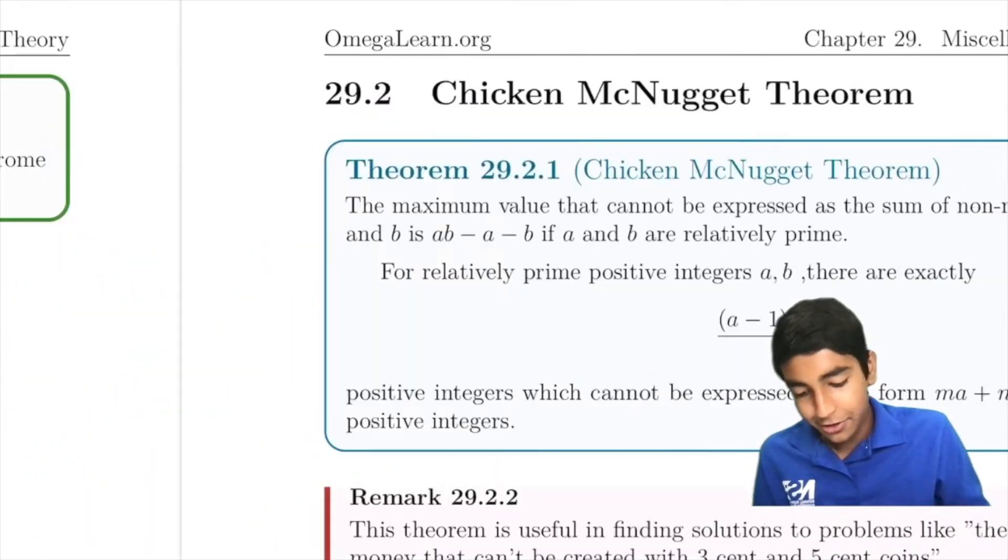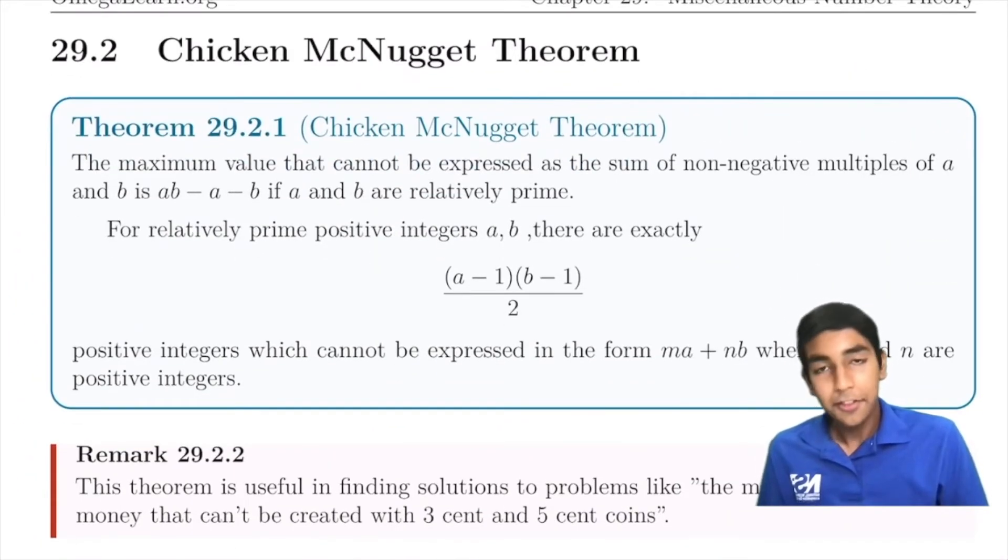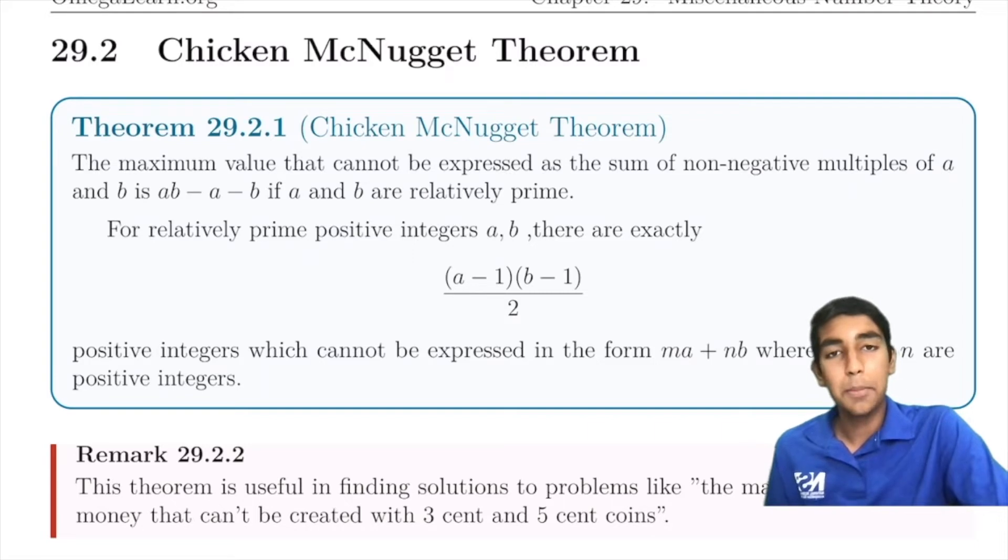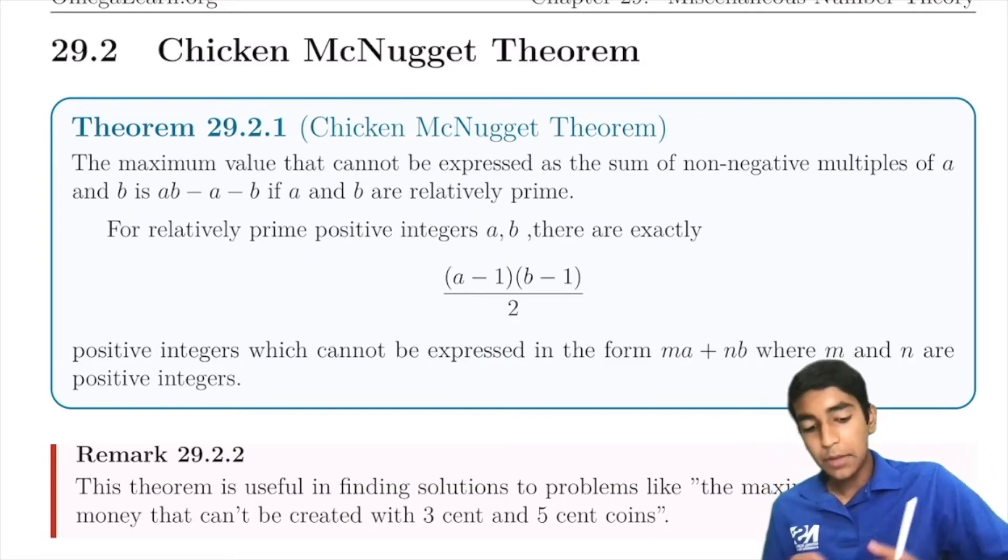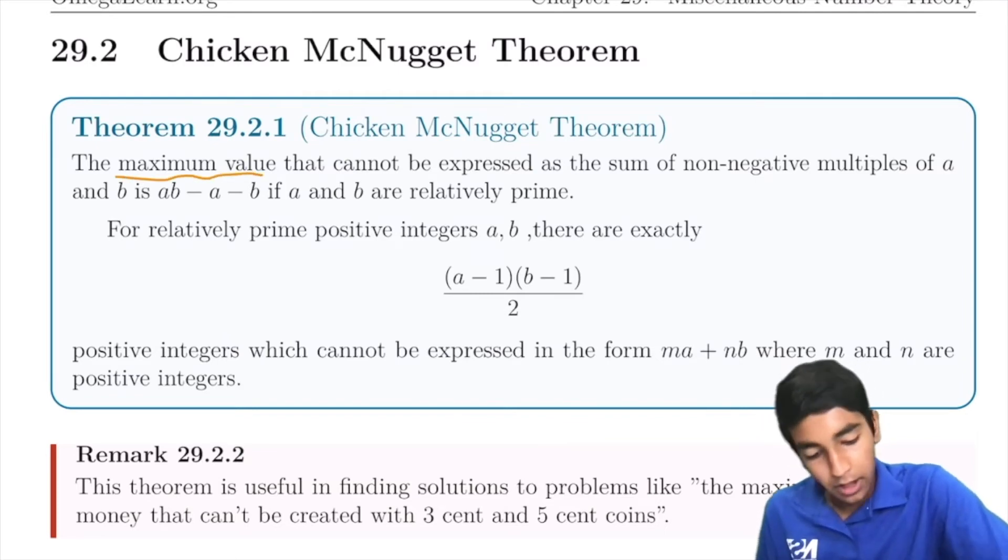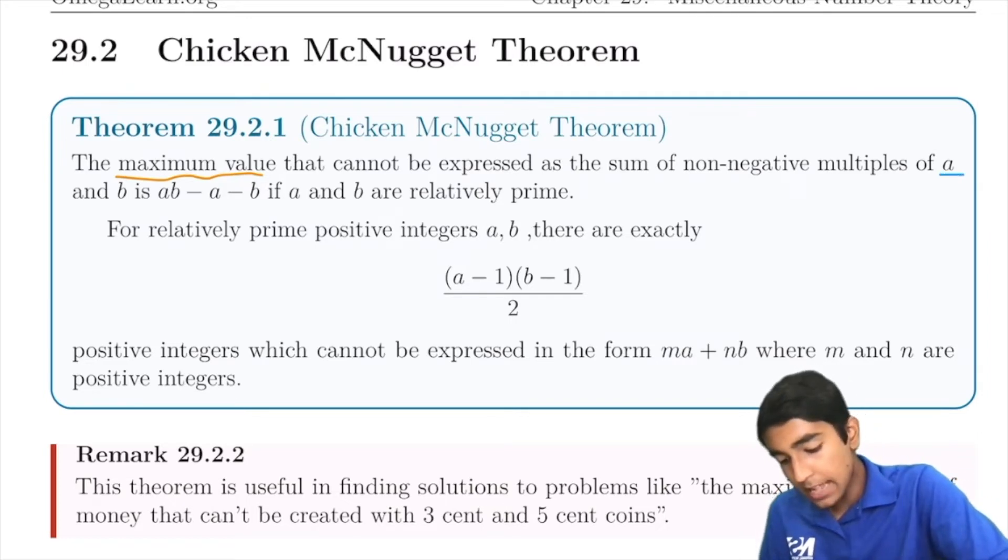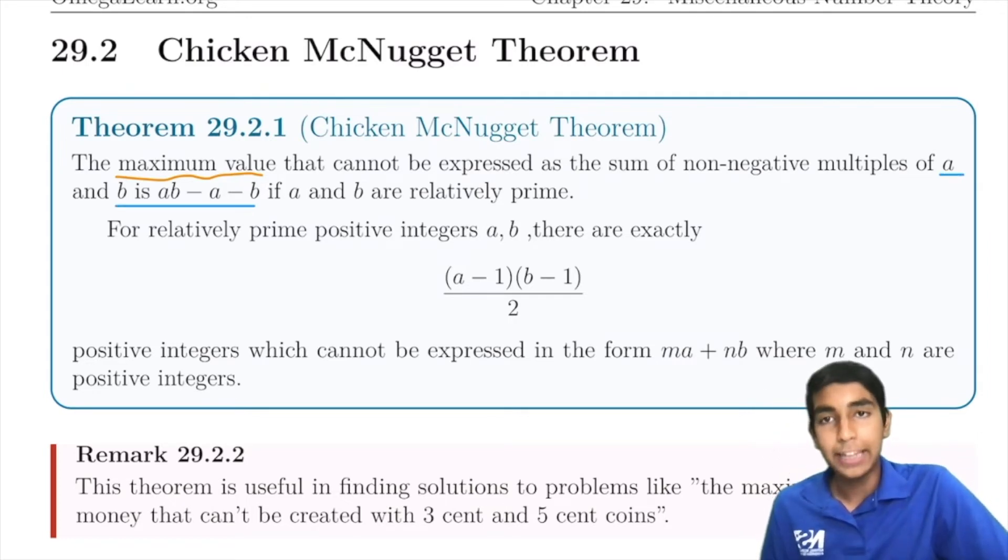We're ready to move on to the Chicken McNugget theorem. This is another kind of miscellaneous number theory problem, but it's also a really cool theorem. Basically what it says is the maximum value that cannot be expressed as a sum of multiples of a and b is ab - a - b.